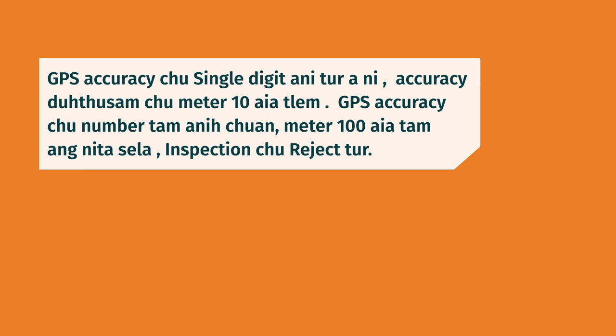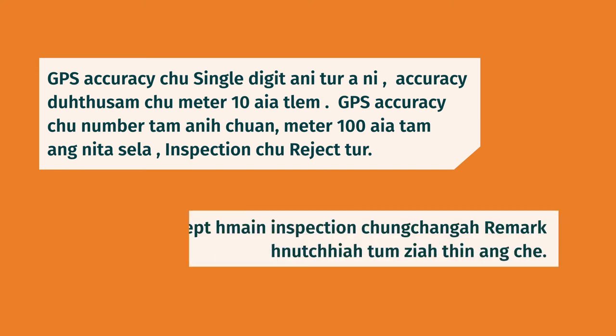GPS accuracy within single-digit meter range is required. If the accuracy number exceeds the meter range limit, the inspection will be rejected. Accept the inspection only after verifying; always enter a remark before confirming. This video has covered the Inspection Recapture Module completely. For further clarification, watch the video again clearly.